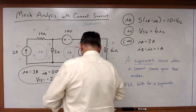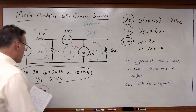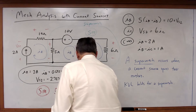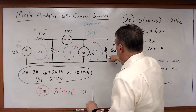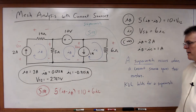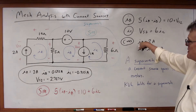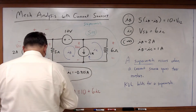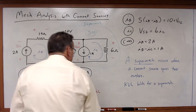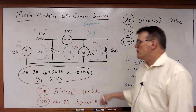Let's write the KVL equation for the super mesh. For my super mesh, I've got 5(Ia minus Ib) — that's a rise — equal to 10 volts, that's a drop. And then going back around, plus 6Ic, and that's a drop. So I've got a super mesh equation. Just as before, I can still write the same two constraint equations: Ia is equal to 2 amps, and Ib minus Ic is equal to 1 amp. Three equations, three unknowns — I can now solve for the three mesh currents.